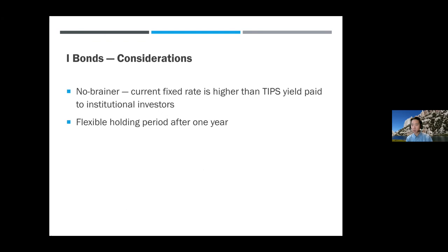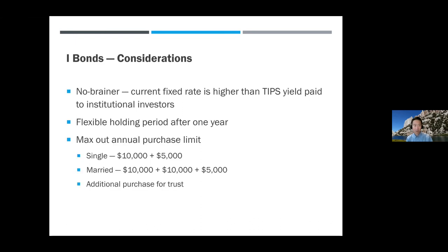If you're single, that's $10,000 buying directly from TreasuryDirect.gov plus $5,000 from your tax refund. If you're married, each person gets $10,000 plus another $5,000 from the tax refund. If you have a trust, you can set up another account to buy an additional $10,000. The Bogleheads wiki has an I bonds entry; TreasuryDirect.gov has detailed information and even a guided tour video to help you navigate the account. I also have a blog post on how to pay extra to the government to increase your refund for buying I bonds, with instructions for TurboTax and H&R Block.